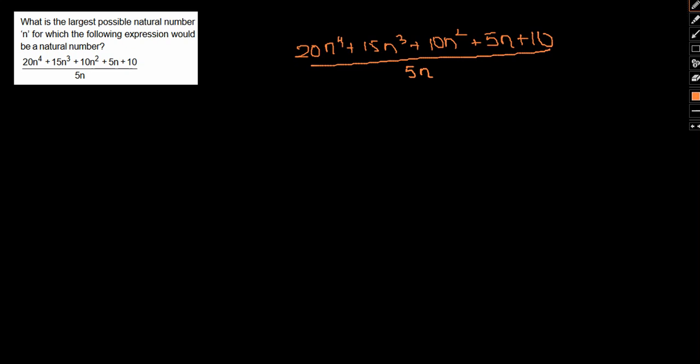Let me divide the entire term by 5n. So this would be 4n cubed plus 3n squared plus 2n plus 1 plus 2 by n. Now we need the largest possible value of n. So here n can actually be only 2 values, that is 1 and 2.